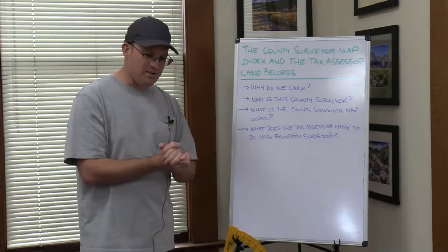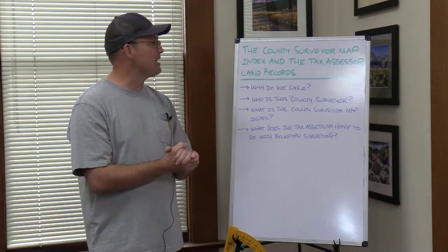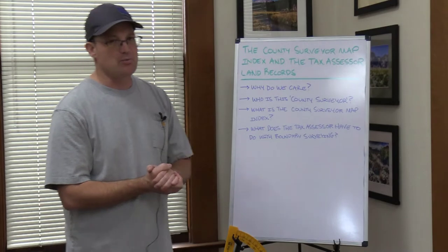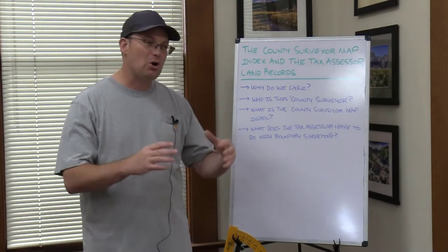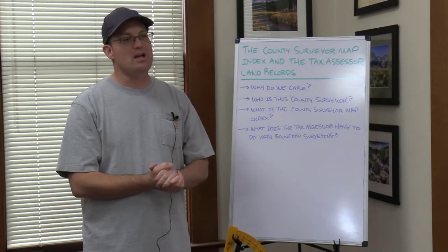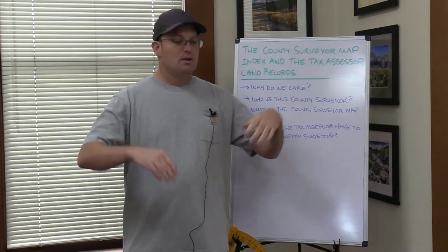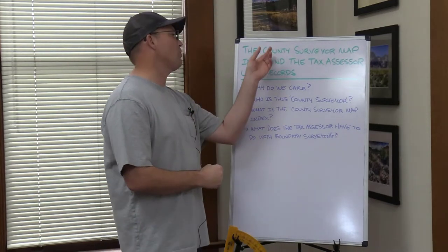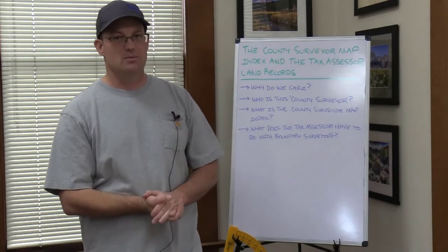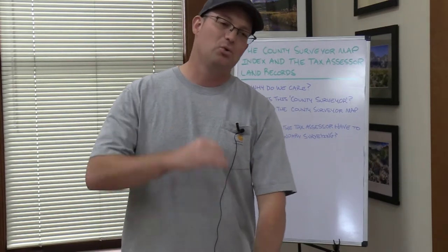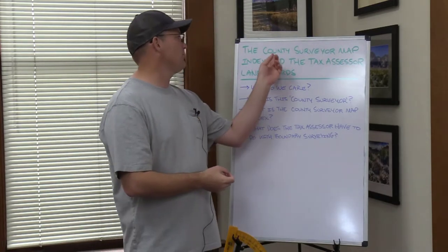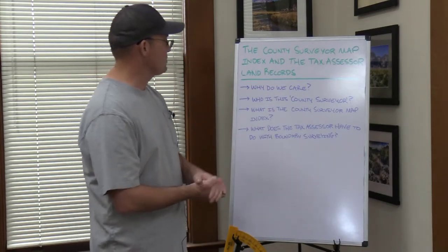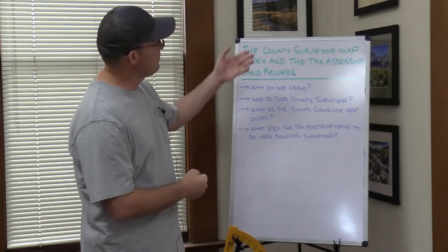So why do we care? Why is this important? The county surveyor map index and the tax assessor land records are really important tools, at least in California, for boundary research. Boundary research is a really important part of the boundary resolution process. You can't do a good boundary survey if you haven't evaluated all the available land records, and in California you can't do good research unless you've checked both of these. There's a chain of dependencies — these are tools we can't do a good job without.